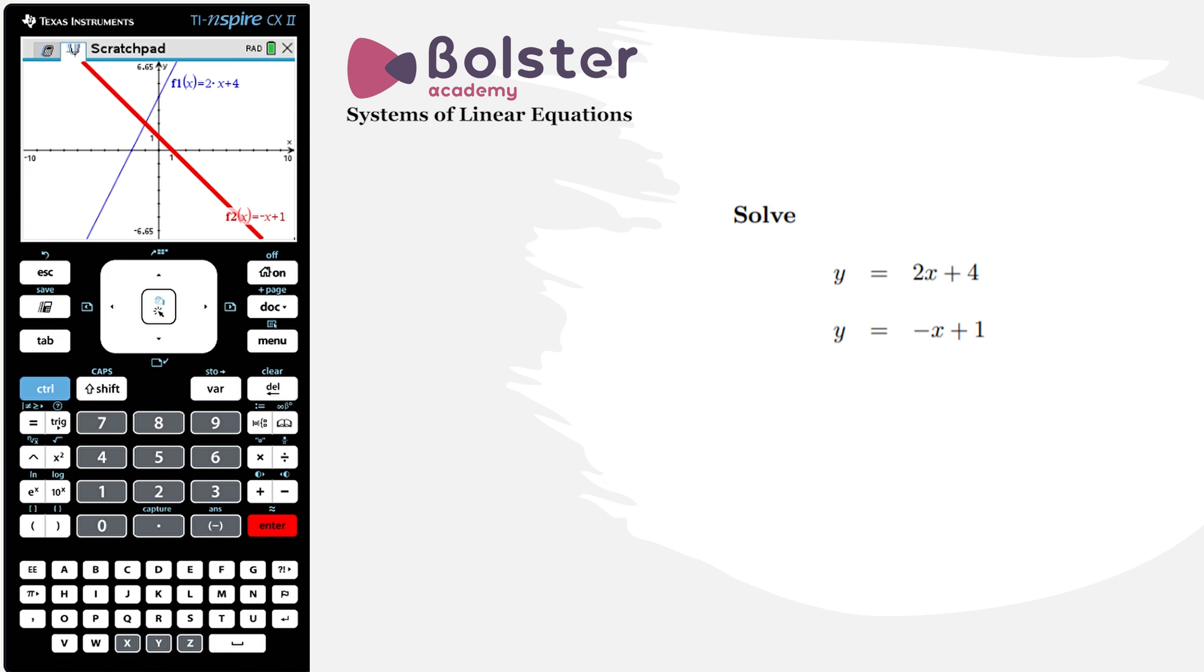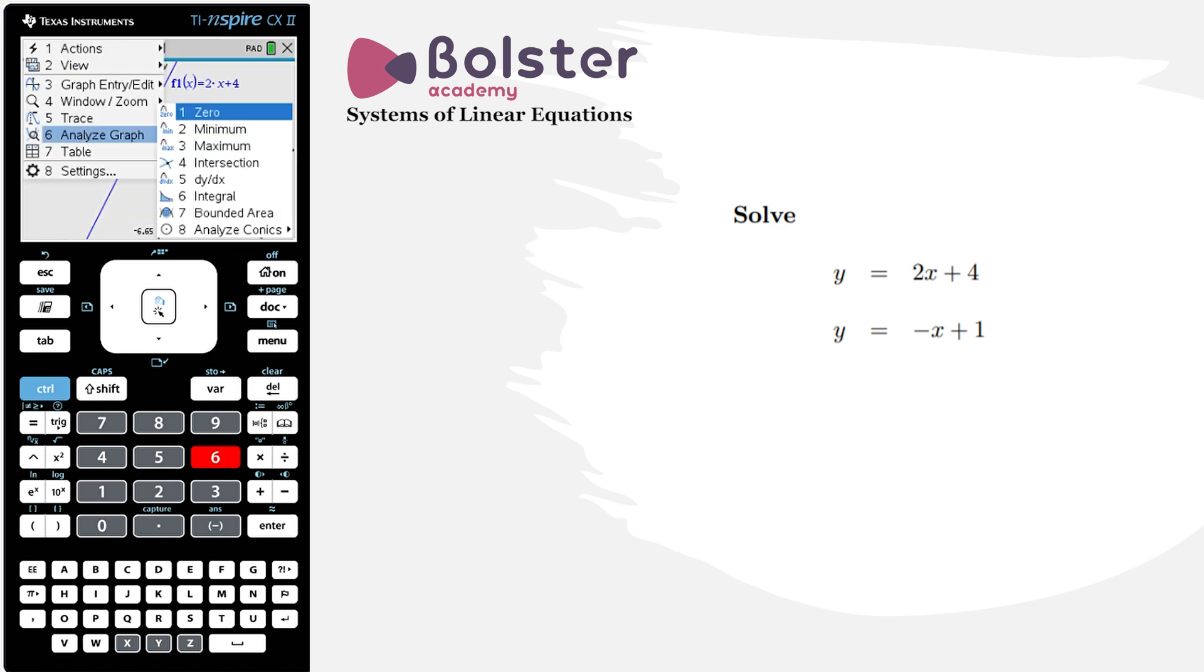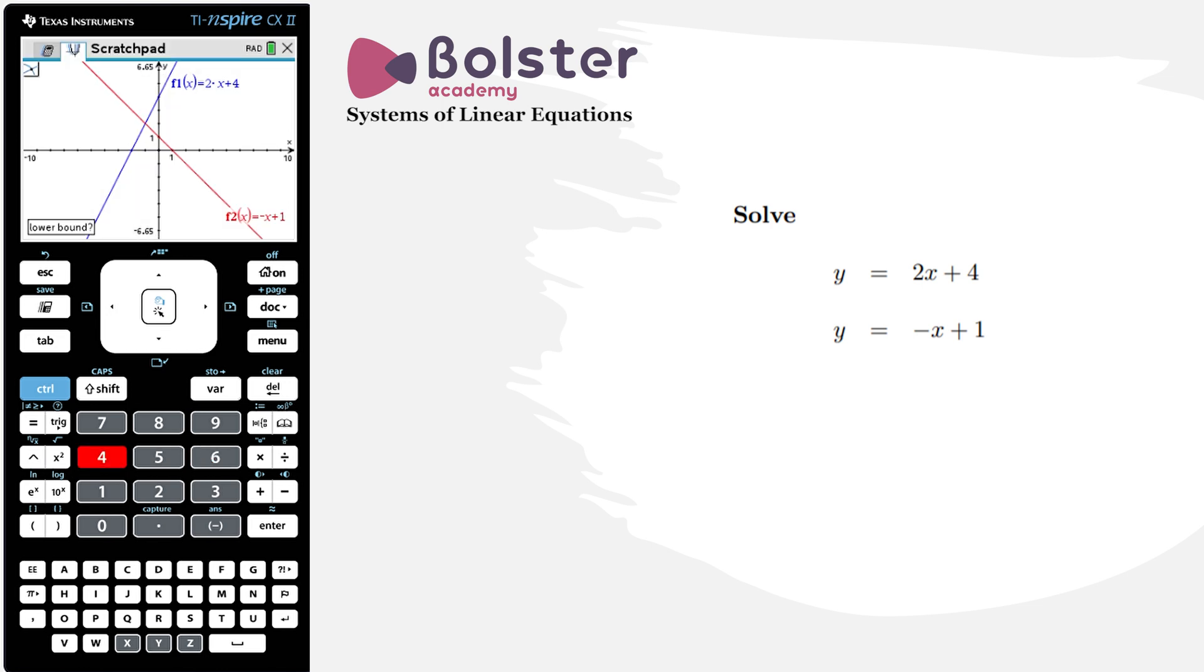Now in order to find the solution to these equations, we want to find the point of intersection. So we hit the menu button, we hit analyze graph number 6, and we hit intersection number 4. Now I'm just going to choose my lower and upper bounds quite close to the point of intersection.